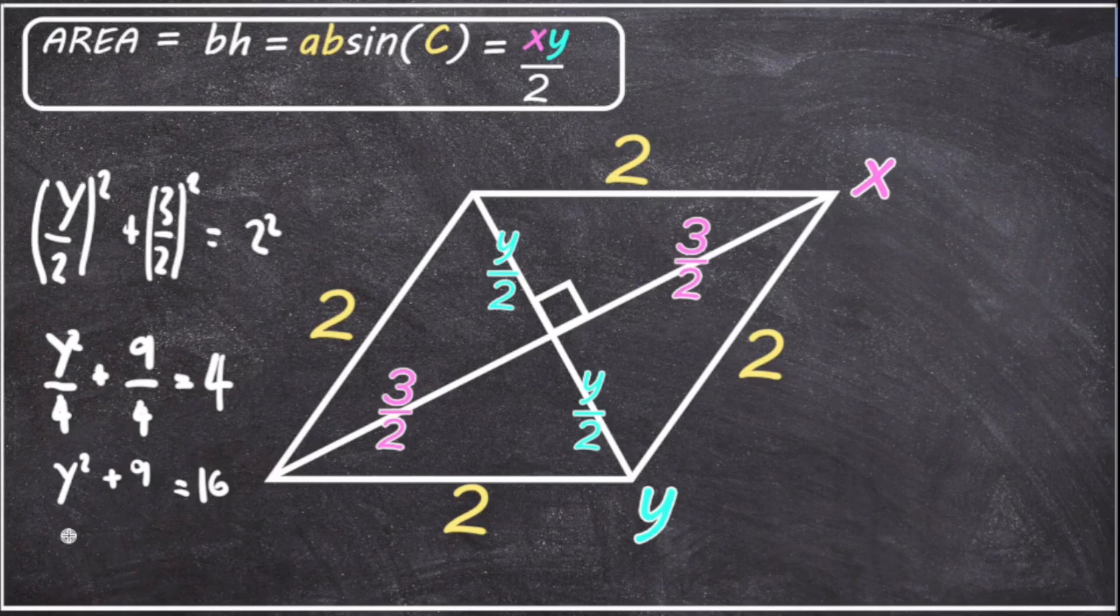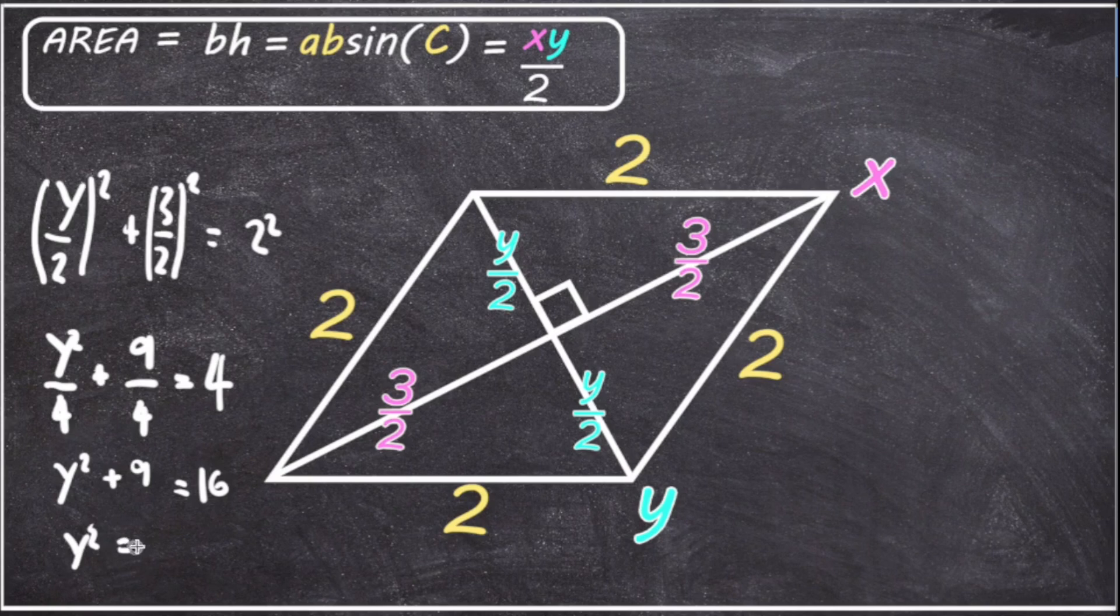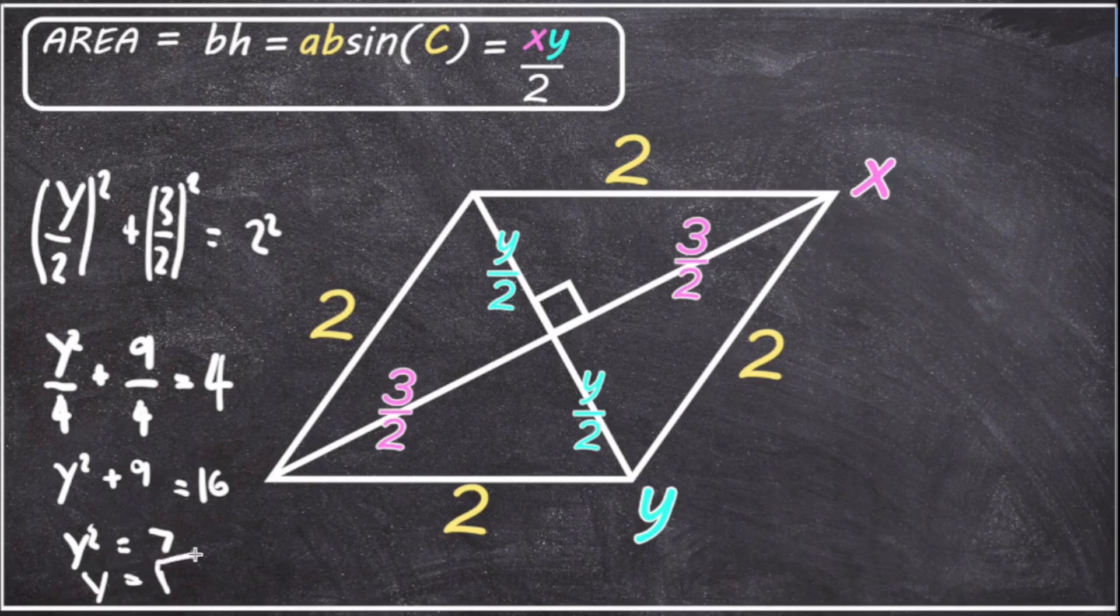And then if we subtract nine from both sides, we'll just have Y squared on the left hand side, and 16 minus nine, well, that equals seven. And to get the value of Y, we simply need to square root. And so Y is equal to the square root of seven.